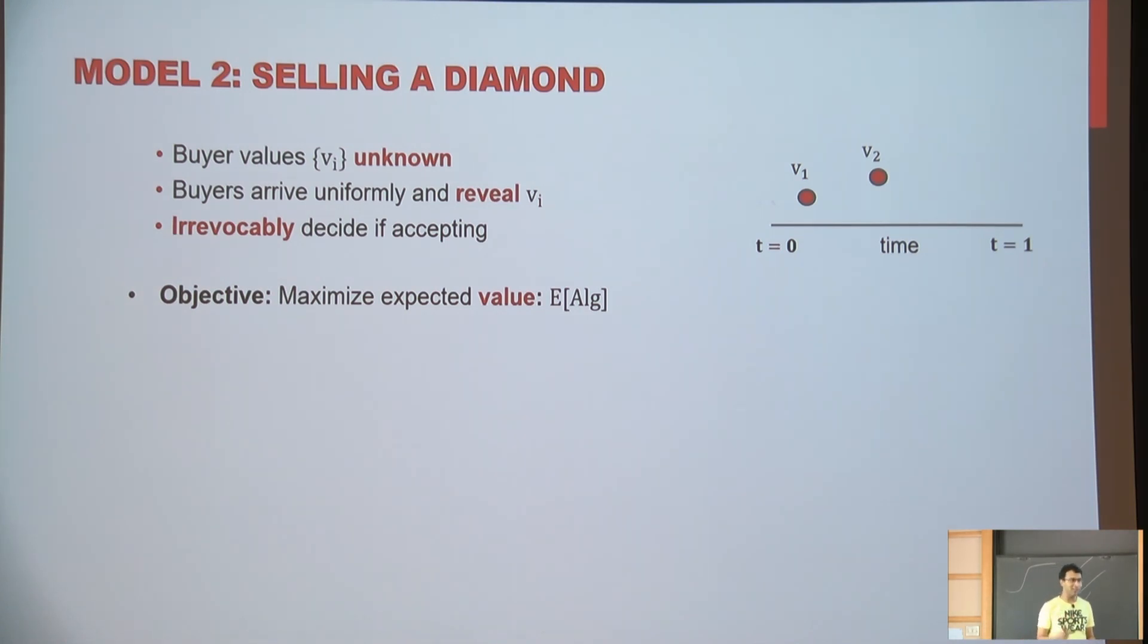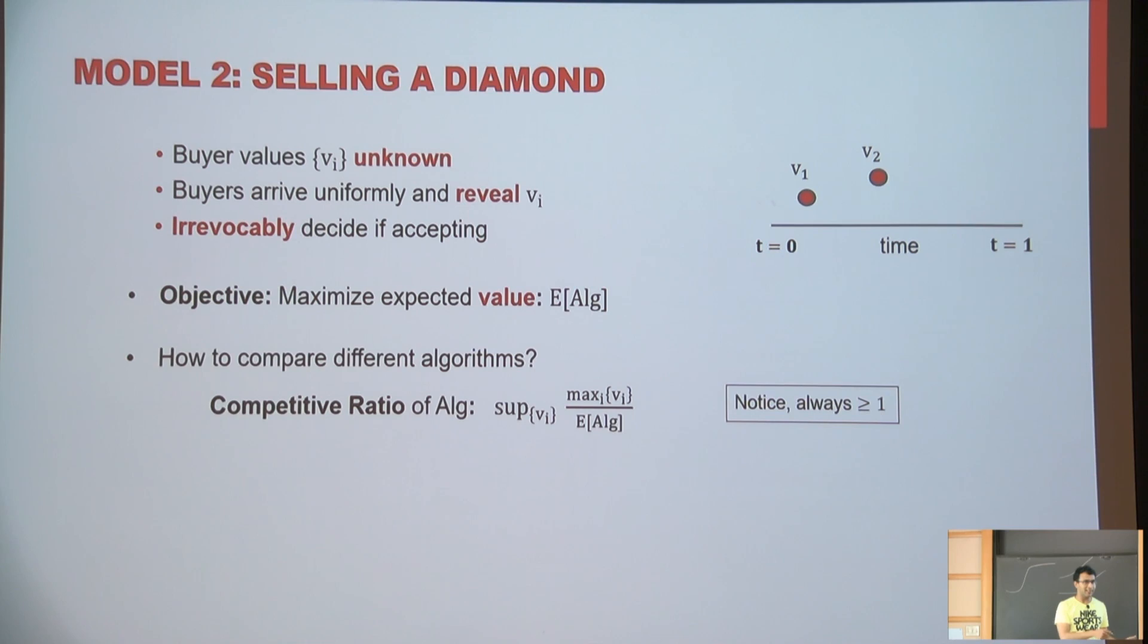And you have to decide, are you taking them or not? If you sell them the diamond, your diamond goes, you get the value and the game ends. If you reject them, then the buyer goes forever. And your goal is, of course, to again maximize the expected value. Now the question is, how would I dislike? What's the metric? Or in what sense, how am I designing the performance of my algorithm?